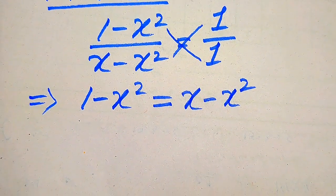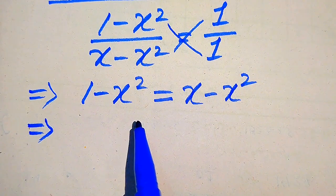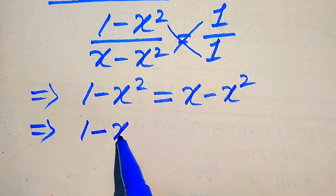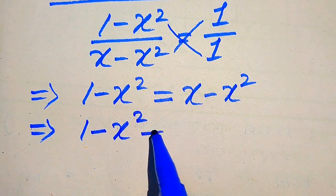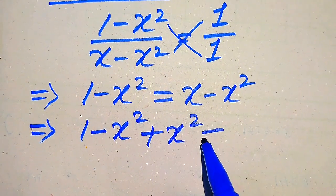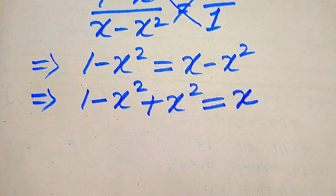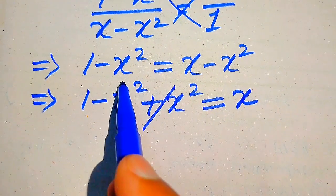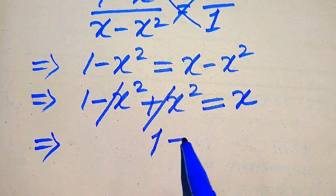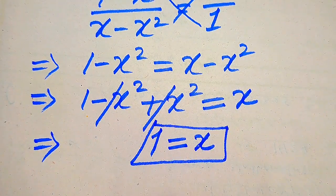Our target is to find the values of x. We move the minus x squared term from the right to the left hand side — being negative, it becomes positive — giving us (1 minus x squared) plus x squared equals x. The positive and negative x squared terms cancel, leaving 1 equals x. So x equals 1 is one root of the given equation.